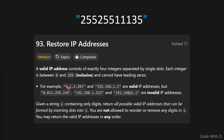For example, 0.1.2.201 and 192.168.1.1 are valid IP addresses. But this one is not valid because it has a leading zero followed by other digits. And 312 is not valid because it's outside the range of 0 to 255. Another example is not valid because it's missing a dot.